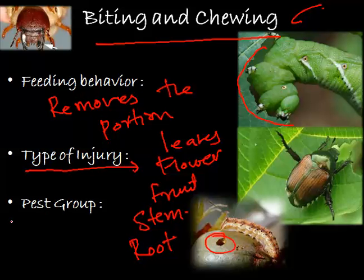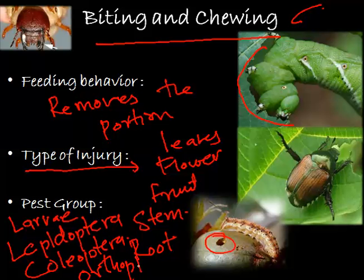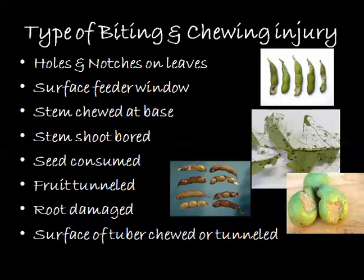These injuries are caused to leaves, flowers, fruit, stem, or even roots — injuries are caused to all parts of the plant by this biting and chewing type. The pest groups which mostly come under this are larvae of Lepidoptera, Coleoptera, and Orthoptera. Citing examples, we have the cutworm and the pod borer, which are examples coming under the biting and chewing type.